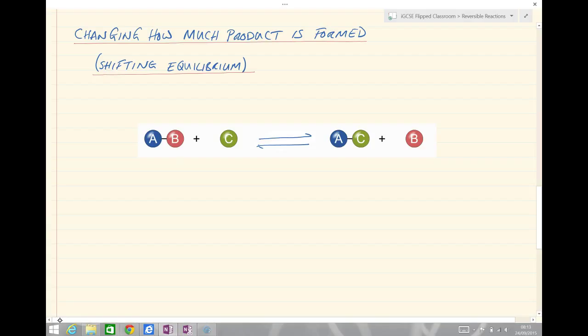In today's lesson, what we're going to look at is changing how much product is formed. Sometimes we describe this as the yield of the product, and it's also described as shifting equilibrium.